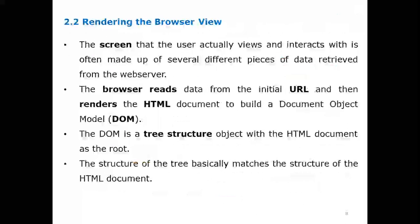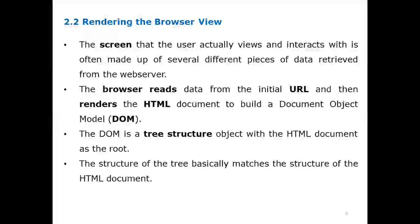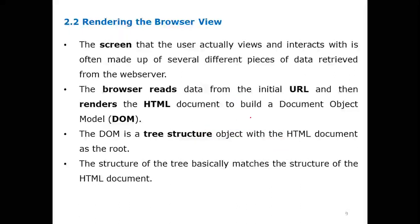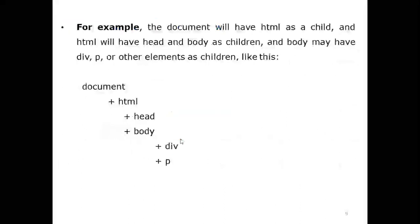The second role of the browser is rendering — interpreting the browser view. The screen the user views consists of several pieces of data retrieved from the web server. When you enter a URL like www.gmail.com, through that URL the HTML document builds a DOM — Document Object Model — as a tree structure. If the DOM tree structure is clear, the output viewing is also very clear.